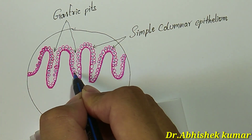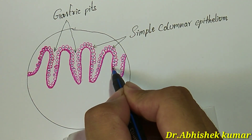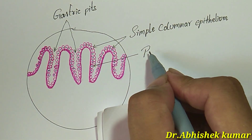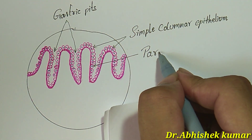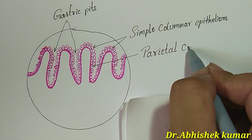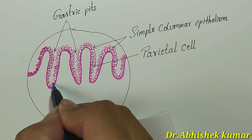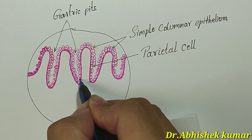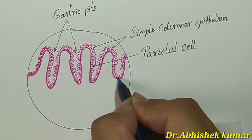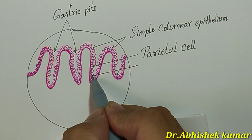Parietal cells are found at the neck of the gastric pit. Parietal cells produce hydrochloric acid, which denatures proteins and helps in activation of pepsinogen. These parietal cells also produce intrinsic factor, which helps in absorption of vitamin B12.